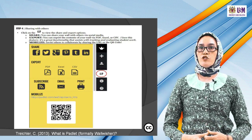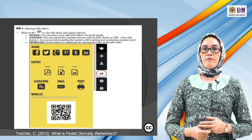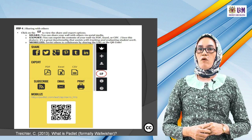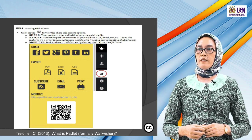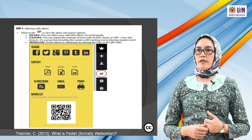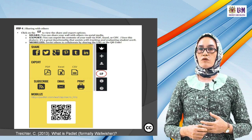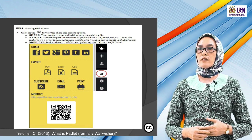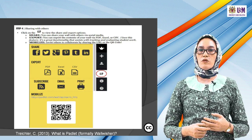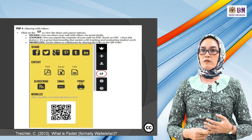Step 4 is sharing. After writing your post, click the button to view share and export options. You can share your wall with others via social media, and export the content of your wall via PDF, Excel, or CSV file. You can also mobilize — invite others to collaborate by sharing the URL or QR code. You can share, export, subscribe, send email, print, or mobilize.